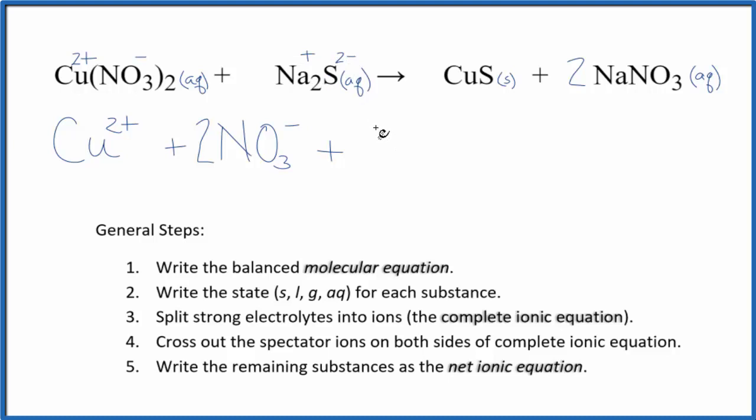So we would put Na+, and again we have a subscript here. So 2 of them, plus the 1 sulfide ion, which is S2-. So those are the reactants. Let's write the products.